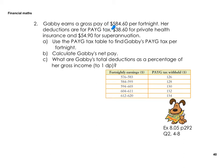Question two: Gabby earns a gross pay of $584.60 per fortnight. Her deductions are: PAYG tax, $38.60 for private health insurance, and $54.90 for superannuation. Part A: use the table to find the PAYG tax per fortnight. Gabby earns $584.60 fortnightly, so we look at that category in the table, which gives us $128. So PAYG tax is $128.